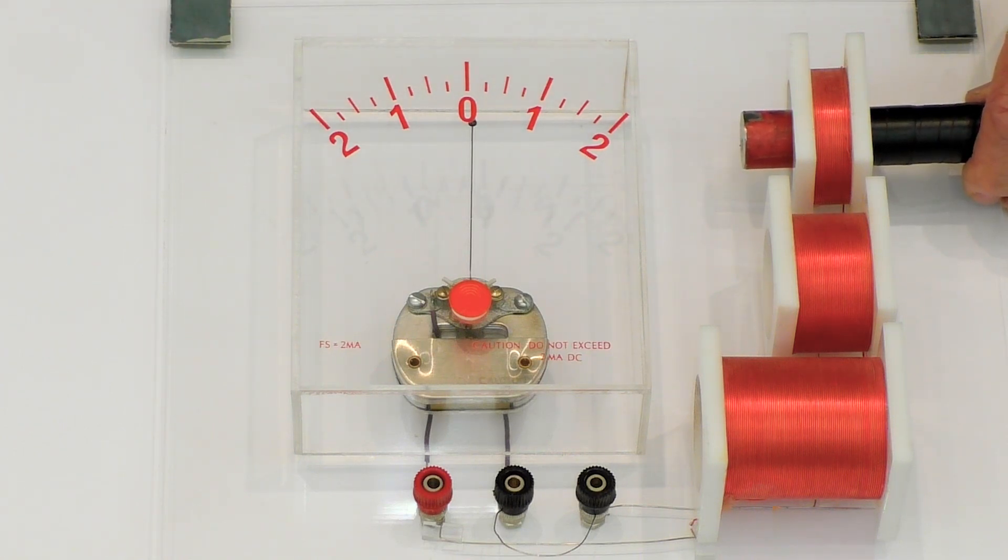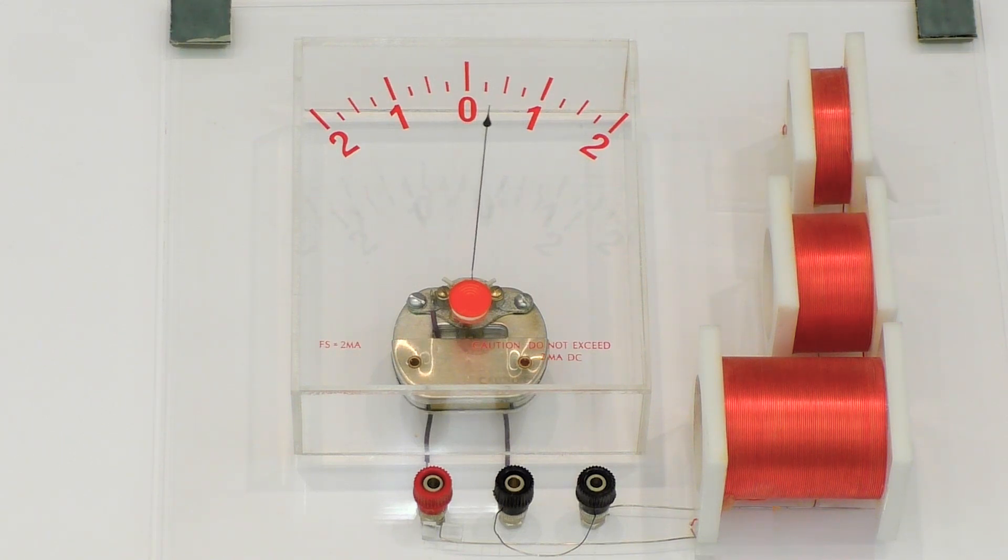So now I'm going to pull the magnet out of the coil. And what you see is that while the magnet was leaving the coil of wire, the current was negative. So we get an opposite effect, and we'll talk a lot more about that.